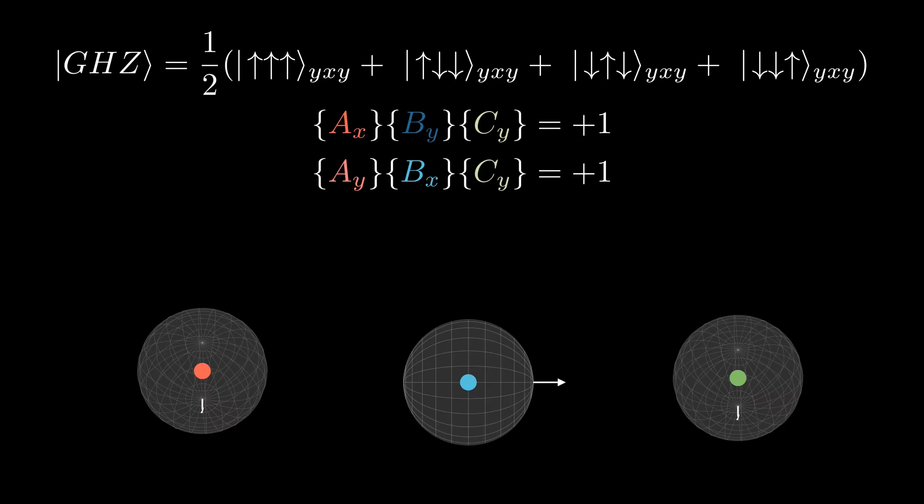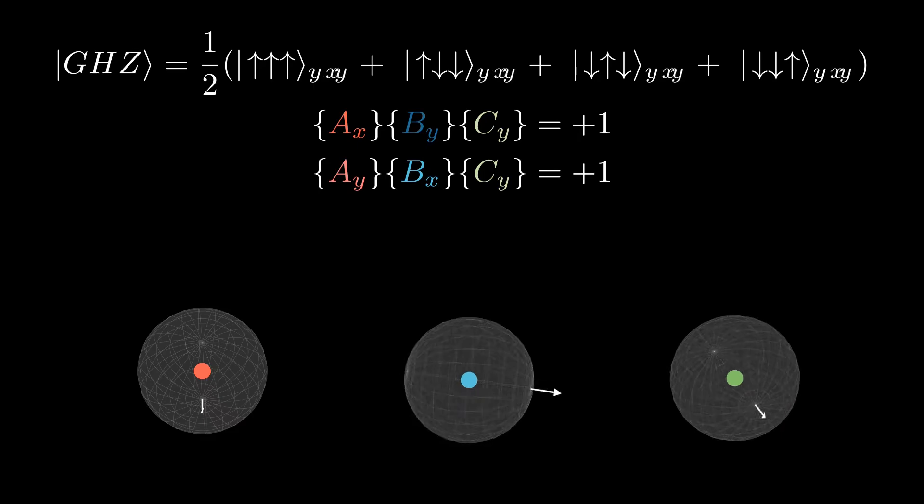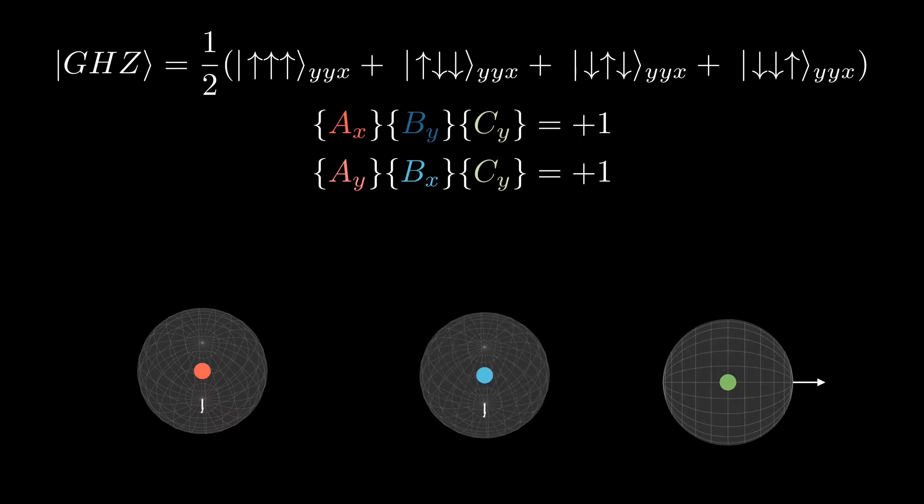And using that same logic for our fourth equation, we're going to find that AY times BY times CX is equal to plus one.